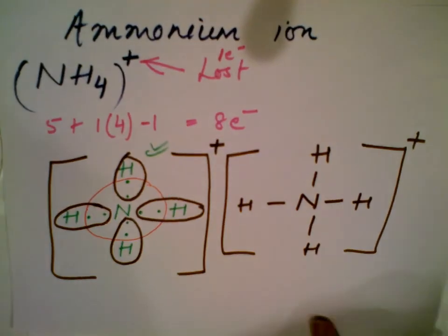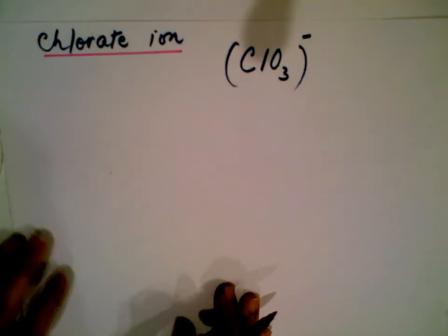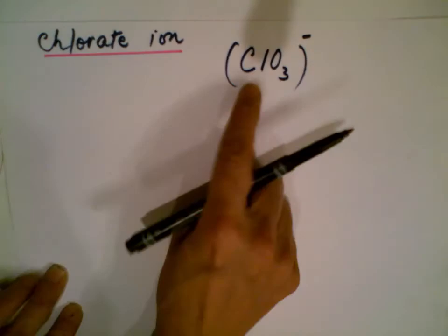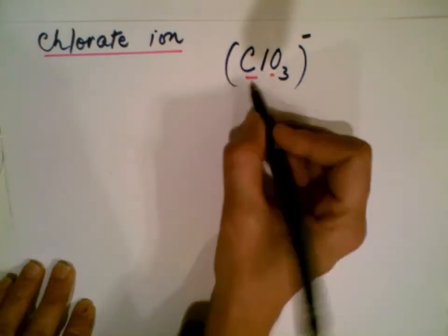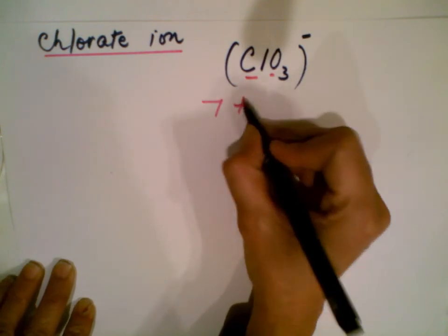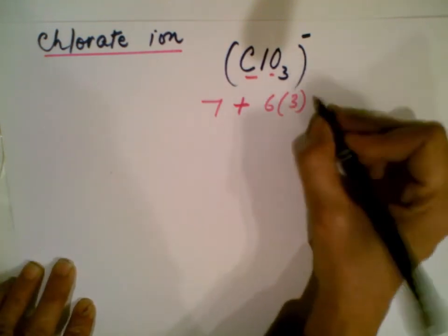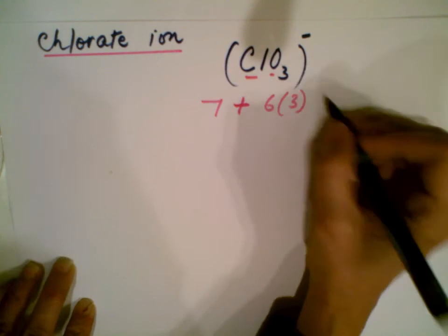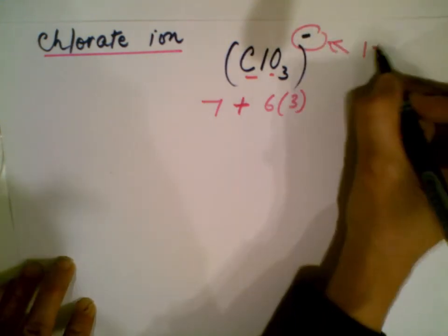Let's do another example with a negative charge: the chlorate ion. Chlorine has seven valence electrons and oxygen has six, multiplied by three because there are three oxygen atoms.